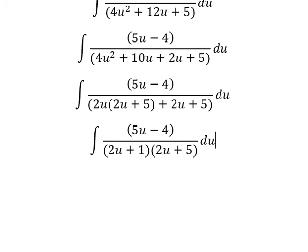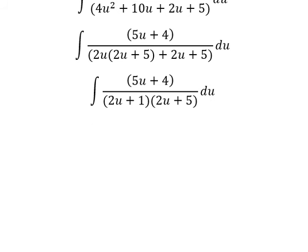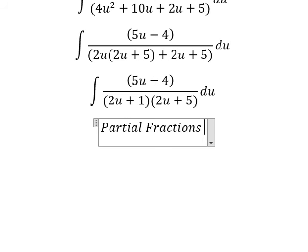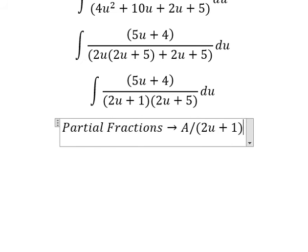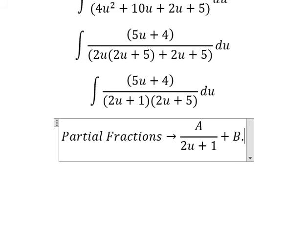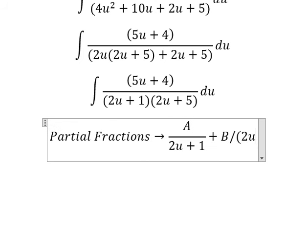Next we can use partial fractions. I will put capital A over 2u plus 1 and capital B over 2u plus 5.